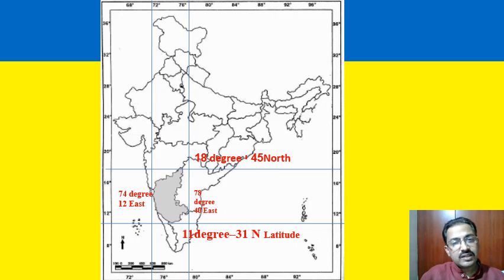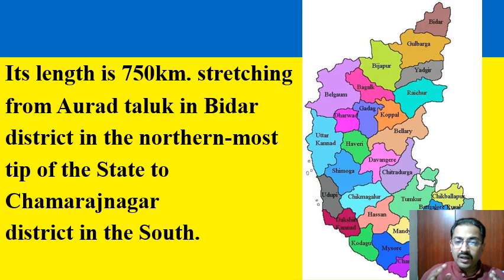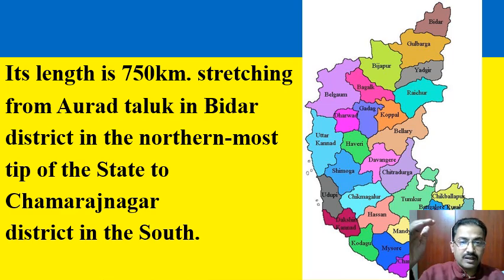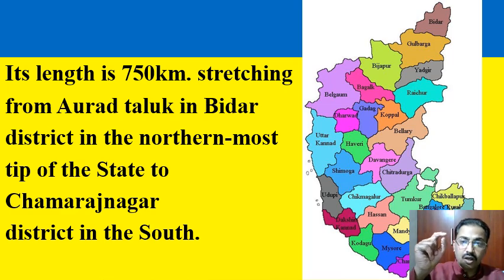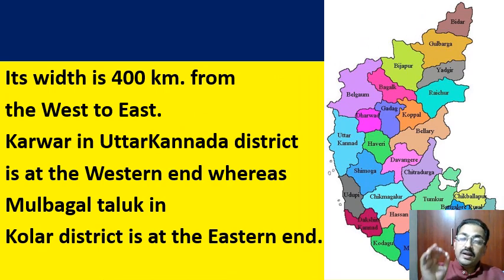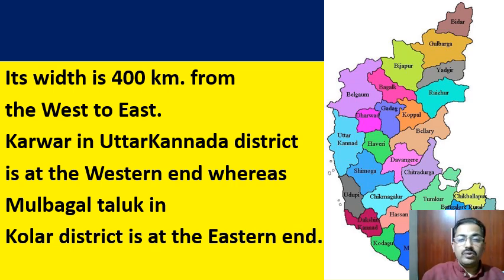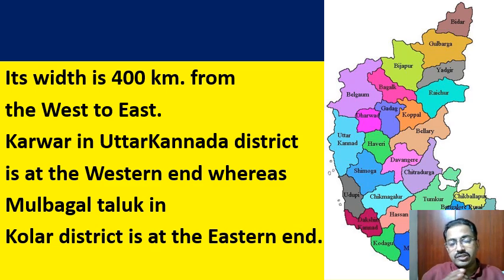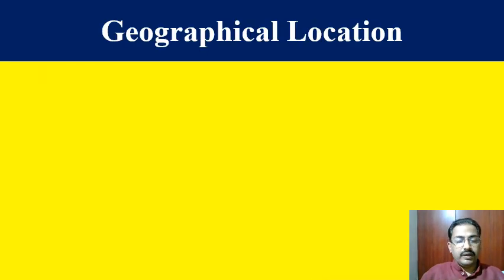Karnataka's total length from north to south is 750 kilometers, stretching from Bidar in the north — specifically Aurad taluk of Bidar — to Chamarajanagar in the south. Its width from west to east extends from Karwar in Uttara Kannada district to Mulubagilu taluk in Kolar district, which is about 400 kilometers.